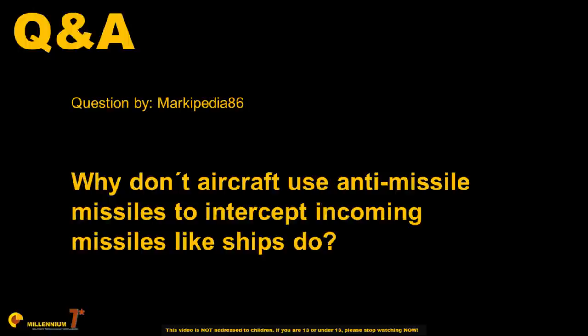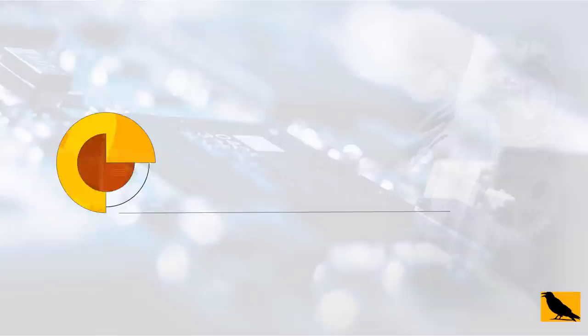Hello clever people and welcome to another Q&A video. Today's question is by Markipedia86: Why don't aircraft use anti-missile missiles to intercept incoming missiles like ships do? Well, good question, and it is something that is being debated from time to time on Reddit or in forums. I've seen it discussed many times, and yes, it is definitely something worth covering because it's definitely not intuitive.